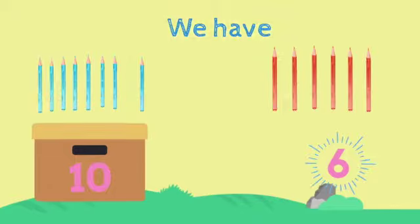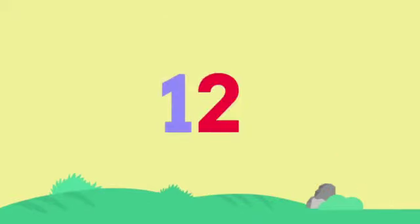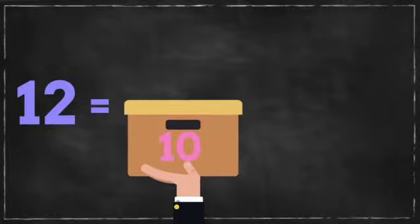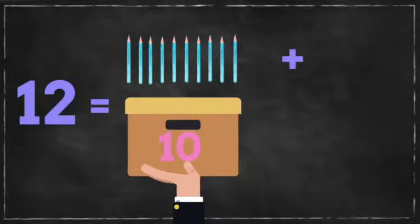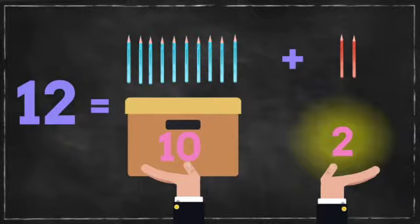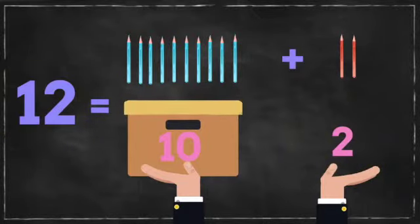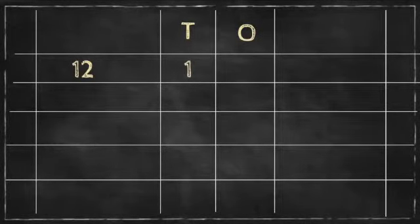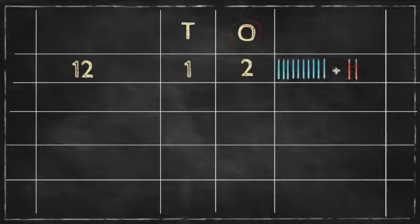Now I have to show number 12. One, two, twelve. How will I show that number? I will take a box of 10 pencils in one hand and 2 pencils in the other hand. So 1 box of 10 and 2 more is 12. I will write 1 for T and 2 for O. So one, two, twelve.